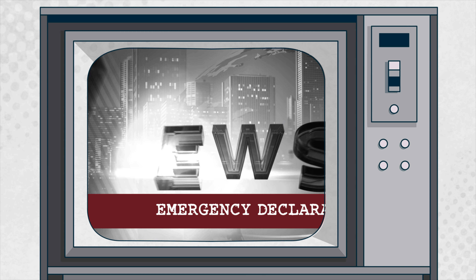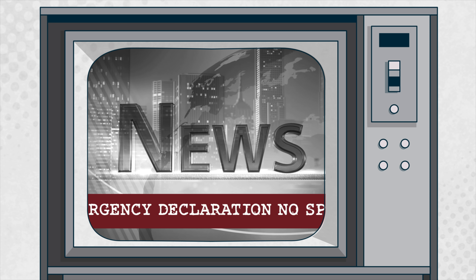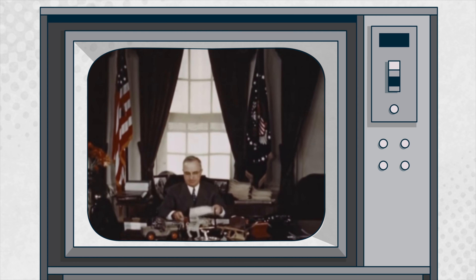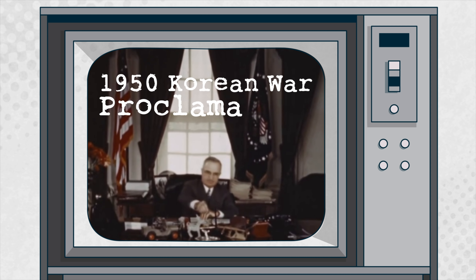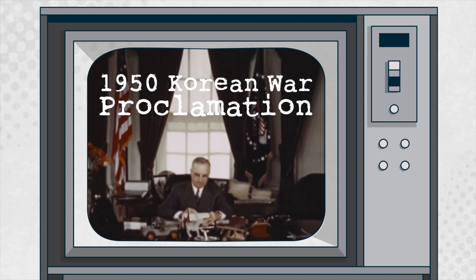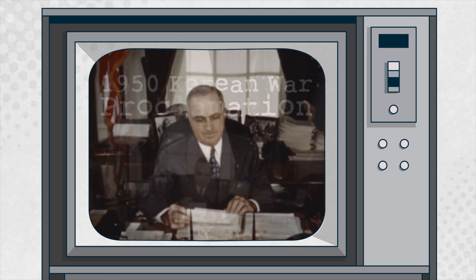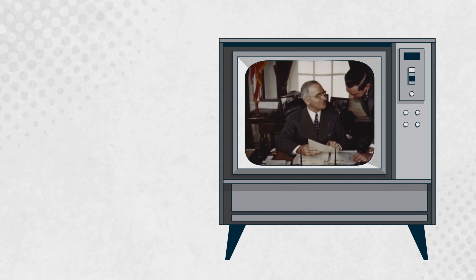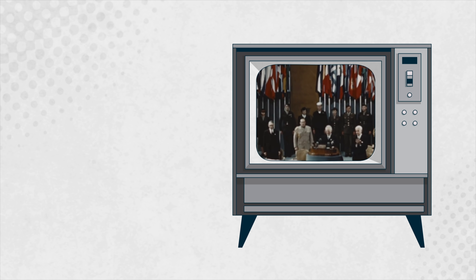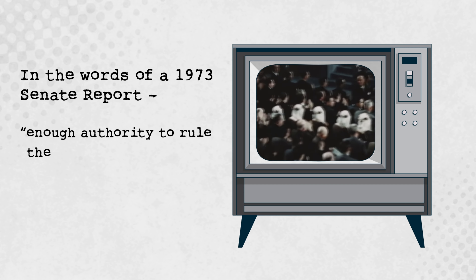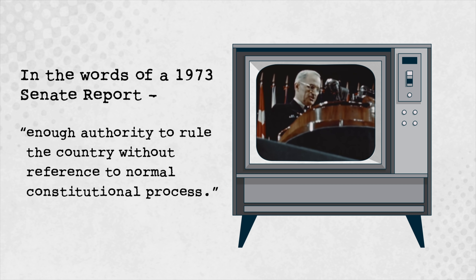Often, these emergency declarations were open-ended with no specified end date. Consequently, some of them remained in effect for decades. For example, President Truman's 1950 Korean War Proclamation of National Emergency was still in place when the NEA was enacted more than 25 years later. Given the breadth of emergency powers delegated to the president by various statutes, Congress was concerned that the existence of ongoing, indefinite emergencies gave the president — in the words of a 1973 Senate report — enough authority to rule the country without reference to normal constitutional process.